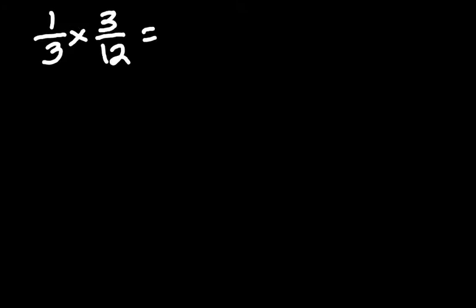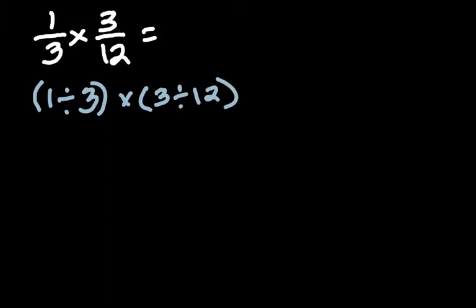One third times three twelfths. That's what we've got. So basically, you know what to do. Put a parentheses, then one divided by three times parentheses, three divided by 12. So you're just taking that fraction and turning it into a division problem. But make sure that you have the parentheses in there. Because now, multiplication and division, you're going to have some issues if you don't. So you put that into the calculator.